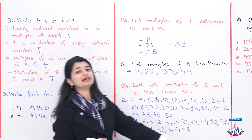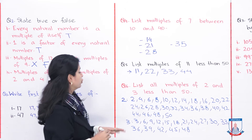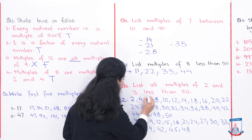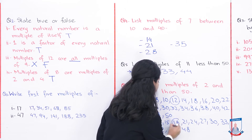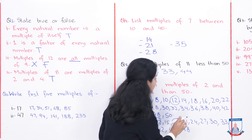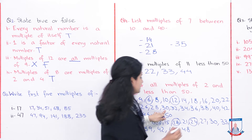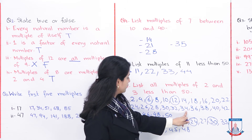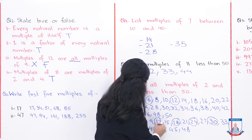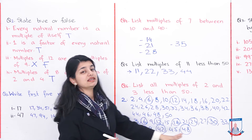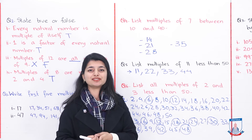Now we have all multiples of both 2 and 3. We need to list the common ones — the numbers that appear in both lists — and they must be below 50. The common multiples are: 6, 12, 18, 24, 30, 36, 42, and 48. Write these together and you will have your answer.